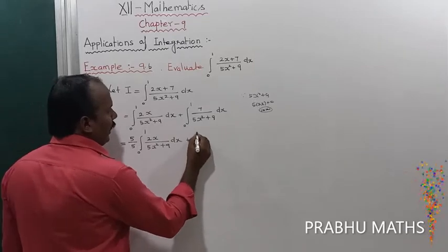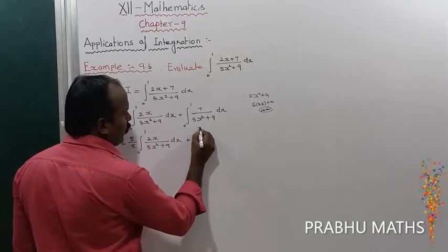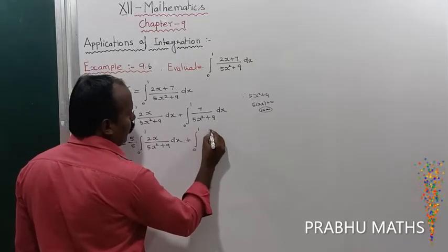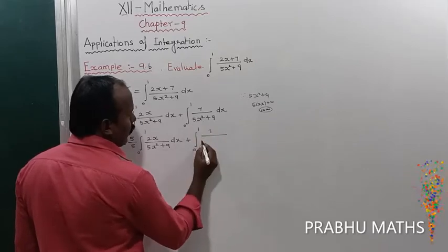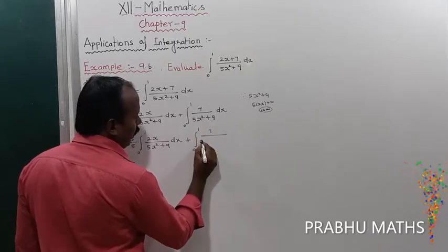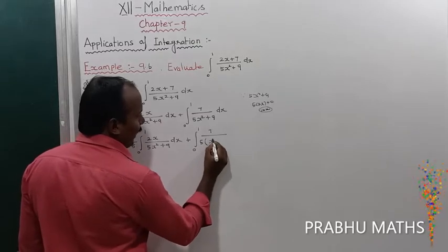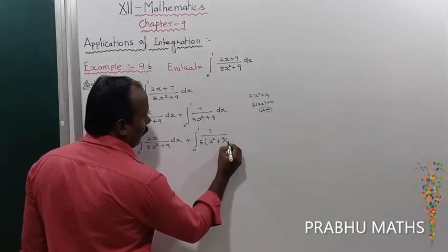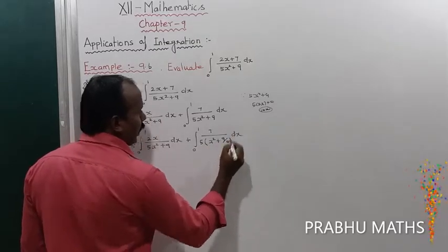For the next step: plus ∫₀¹ 7/(5x² + 9) dx. The common factor of 5 is taken outside, leaving 7/(5) · ∫₀¹ dx/(x² + 9/5).